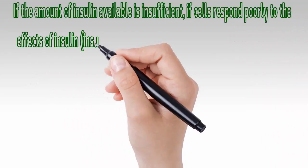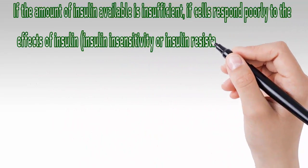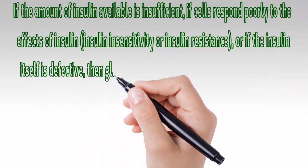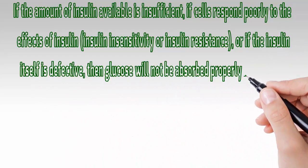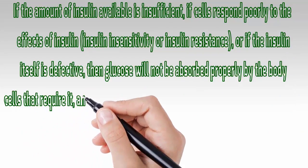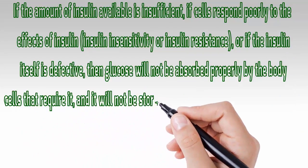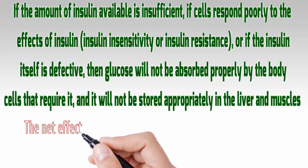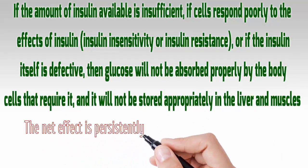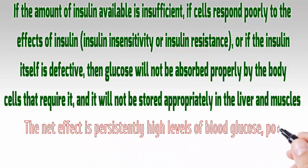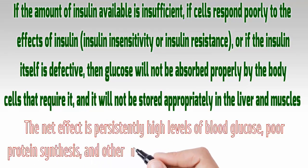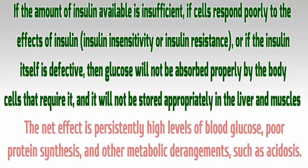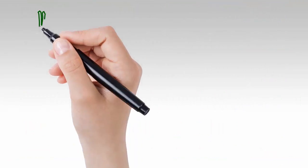If the amount of insulin available is insufficient, if cells respond poorly to the effects of insulin — insulin insensitivity or insulin resistance — or if the insulin itself is defective, then glucose will not be absorbed properly by the body cells that require it, and it will not be stored appropriately in the liver and muscles. The net effect is persistently high levels of blood glucose, poor protein synthesis, and other metabolic derangements such as acidosis.